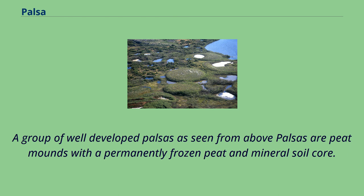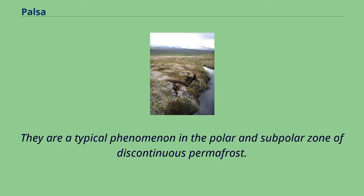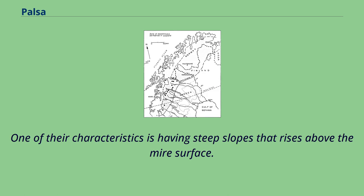A group of well-developed palsas as seen from above. Palsas are peat mounds with a permanently frozen peat and mineral soil core. They are a typical phenomenon in the polar and subpolar zone of discontinuous permafrost. One of their characteristics is having steep slopes that rise above the mire surface.